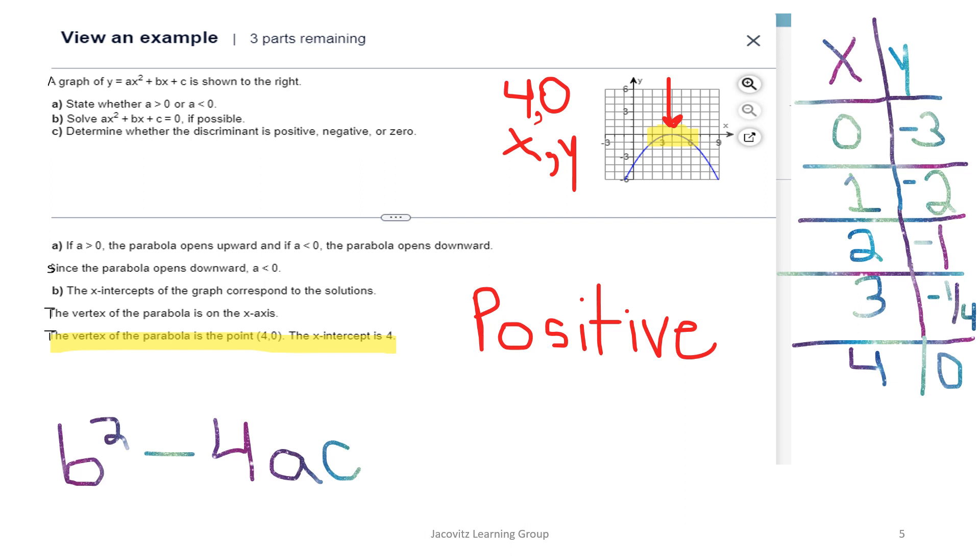Now we're going to get into this situation. There's several things you have to do. Your parabola is going downward, so the parabola opens downward here. Since it opens downward, a is less than zero. The x intercept of the graph automatically corresponds, and the vertex of the parabola is on the x axis at the vertex four and zero.